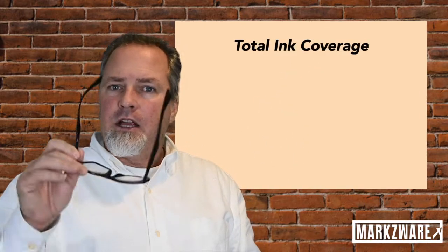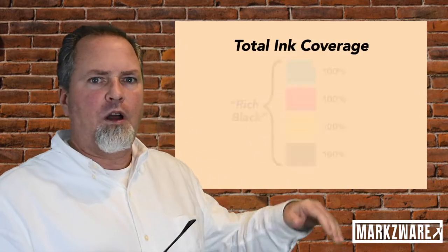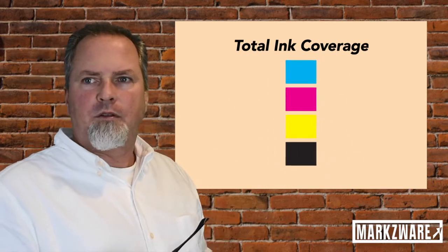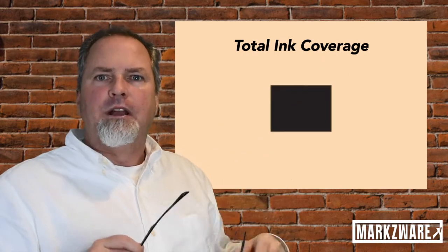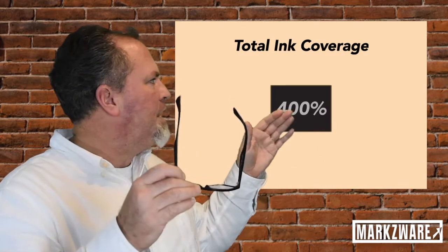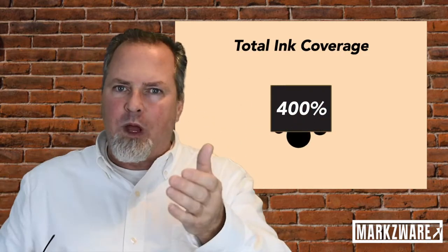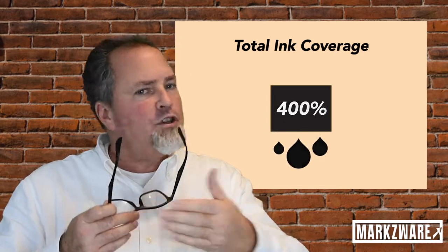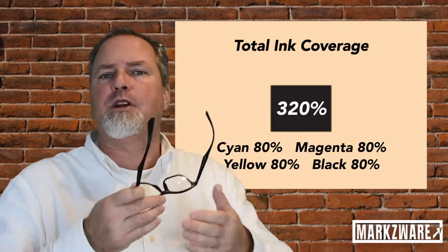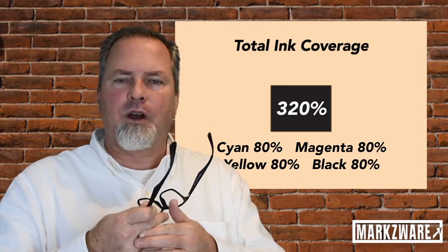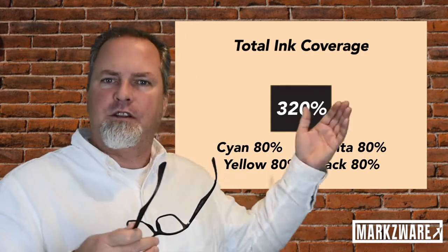Ink coverage is something you might overlook. You think you want 100% black, but if ink coverage is too great in any one area, it might bleed through thin paper — particularly in newspapers. So even though you want 100% black, you might only need 60% black to get the desired effect. Once again, it depends on the output and the final job.